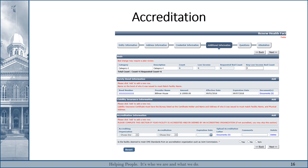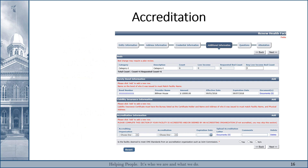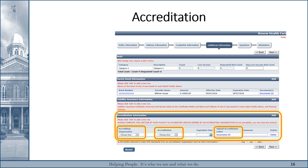Once you've completed your liability insurance information, you will move on to the Accreditation area. If you do not have accreditation, please do not use the Add button — it will allow you to bypass. If you're a new Surgical Center for Ambulatory Patients or an outpatient facility (OPF) and are required by state regulations to be accredited, you can bypass this section for the first six months of your licensure, but after that time frame you must complete the Accreditation section. Please complete the requested documentation using the drop-down menus if available, and follow the directions for uploading the accreditation document just as you did for the surety bond and liability sections.